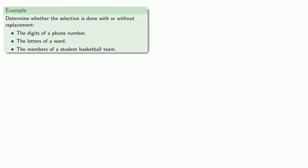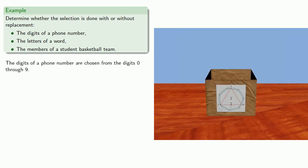So let's consider that. Let's determine whether the selection is done with or without replacement. The digits of a phone number, the letters of a word, or the members of a student basketball team. So the digits of a phone number are chosen from the digits 0 through 9, and since a digit can be repeated, the selection is done with replacement.